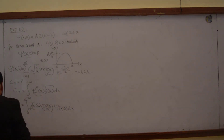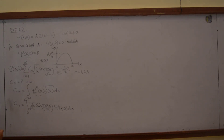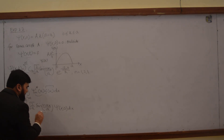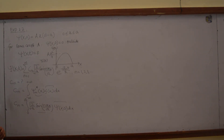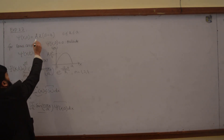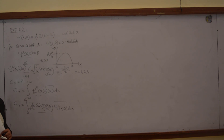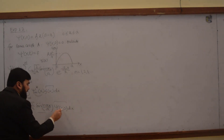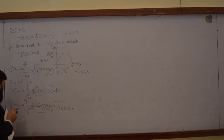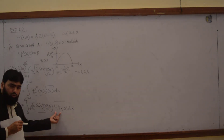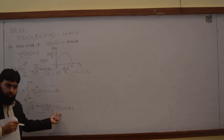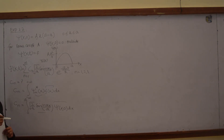Before evaluating this integral, we must normalize the initial wave function. The function contains A, which is the normalization constant. If we don't know A, our answer for the coefficients Cₙ will contain another undetermined constant. So the very first step is to determine the normalization constant A by normalizing Ψ(x, 0).